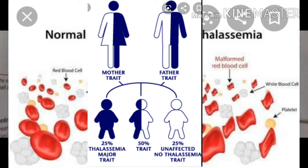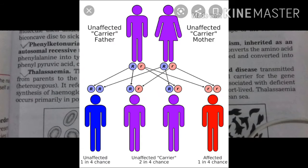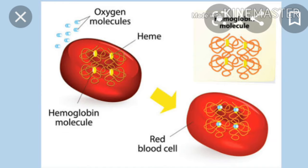It refers to a group of hereditary hemolytic anemias associated with deficient synthesis of hemoglobin. The red blood cells are small (microcytic), pale, and short-lived. Thalassemia occurs primarily in populations from countries bordering the Mediterranean Sea. It is an inherited abnormality in hemoglobin which causes red blood cells to break down too easily. The disease affects both sexes equally.